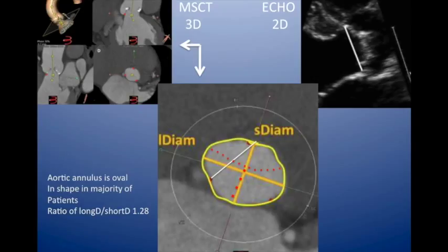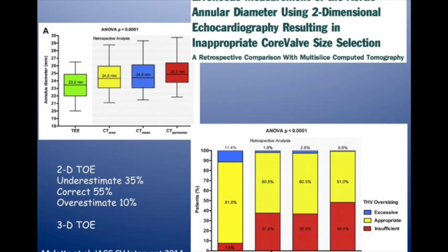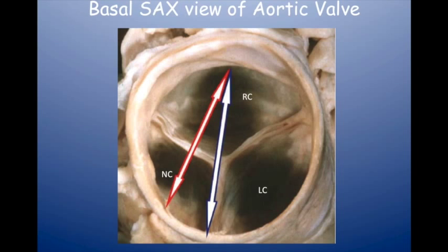The annulus is oval in nearly all patients. You need to measure the area, perimeter, short diameter, long diameter, mean diameter, perimeter-derived diameter, and area-derived diameter — about 6 to 8 different measurements — and various ones work for different valves. Transthoracic echo understimates the annulus diameter by 1.7 mm according to one study; 2D TOE by 1.2 mm. In a more recent study, in up to 48% of cases the annulus was incorrectly sized on 2D transesophageal echo compared to multi-slice CT.